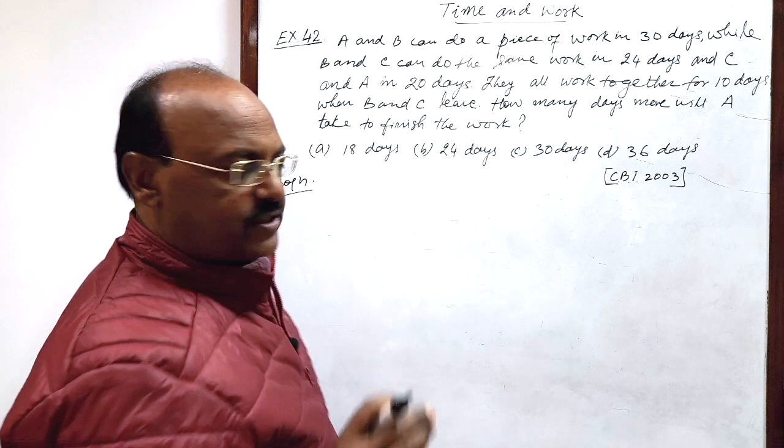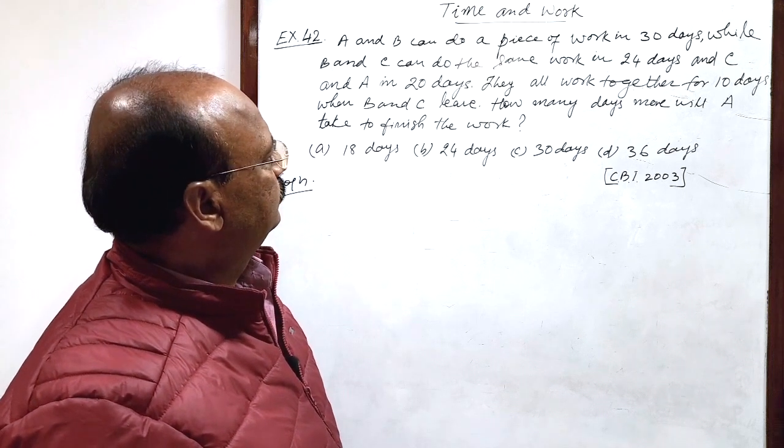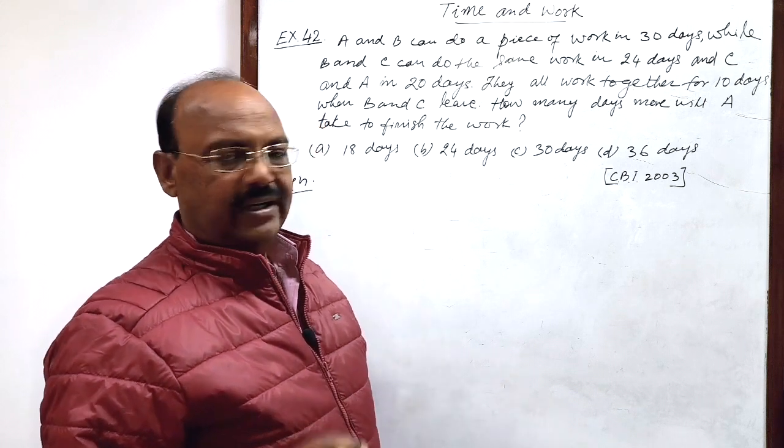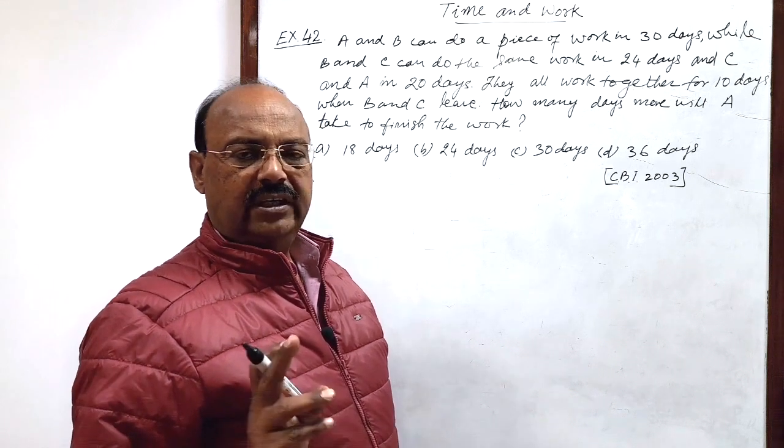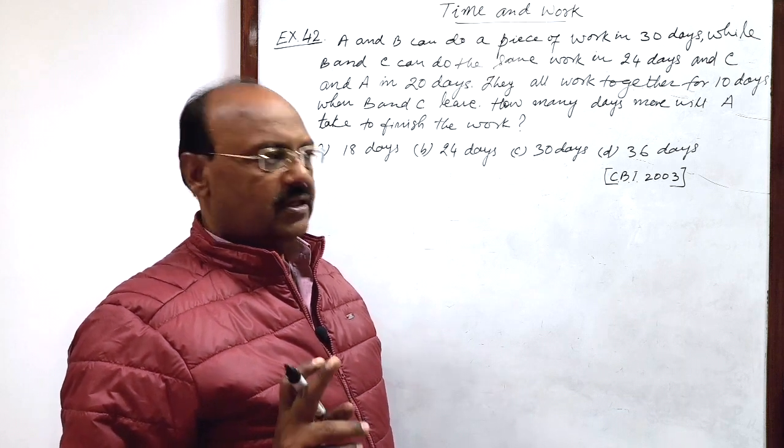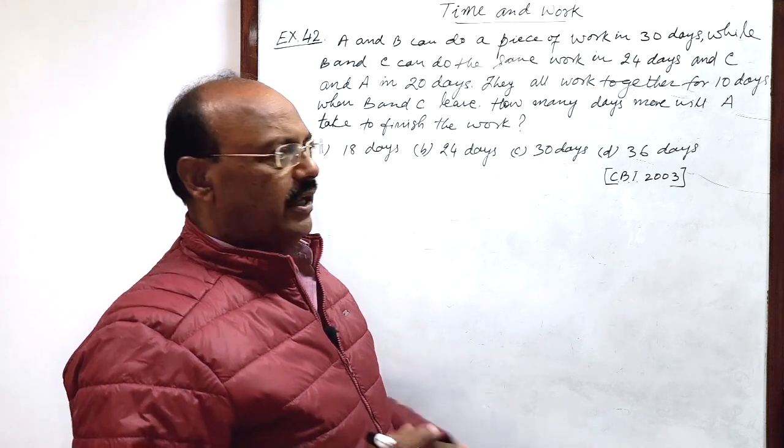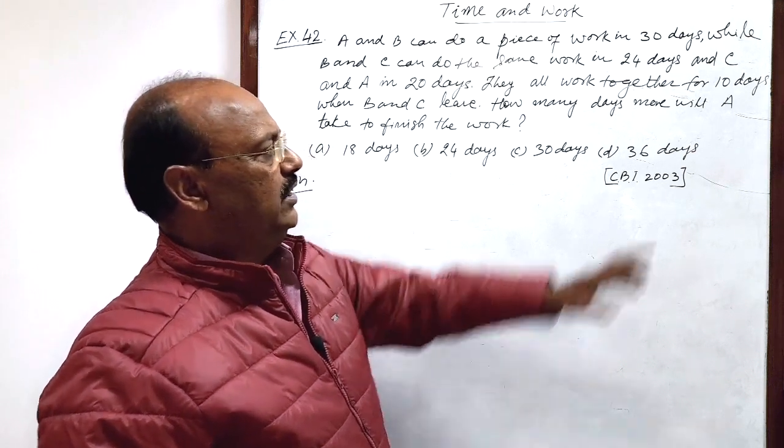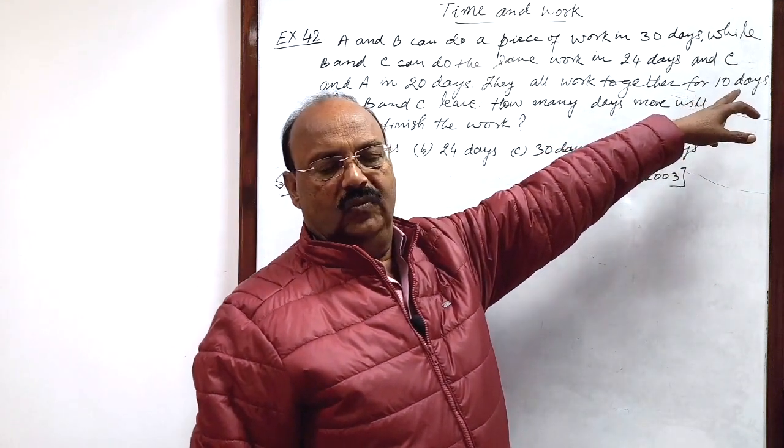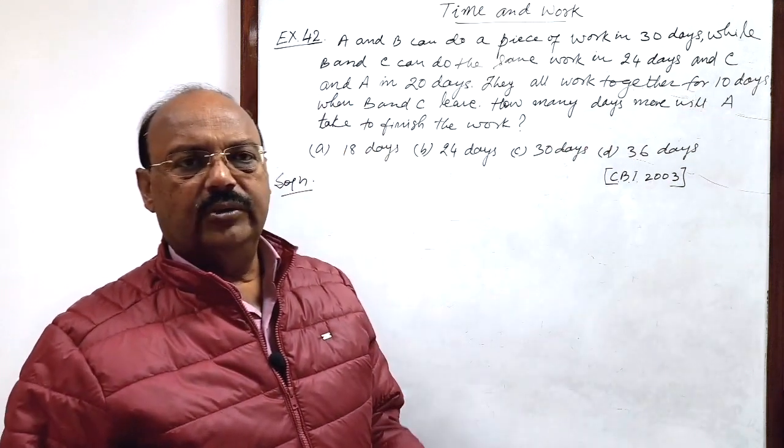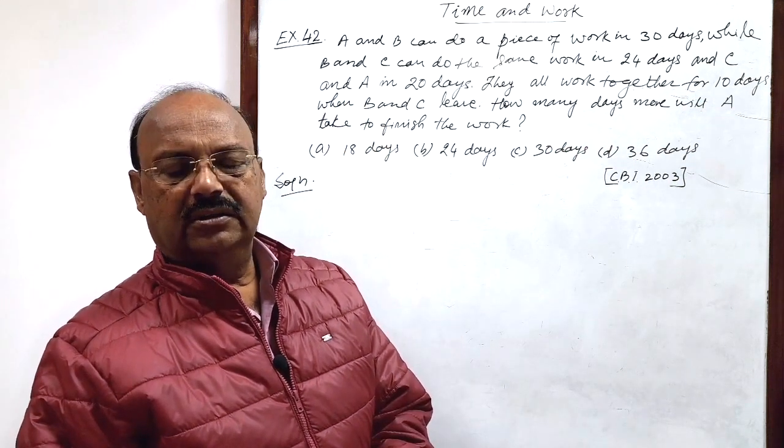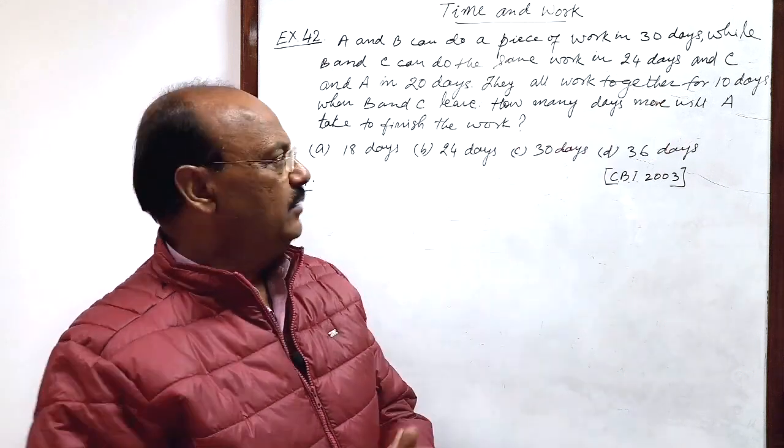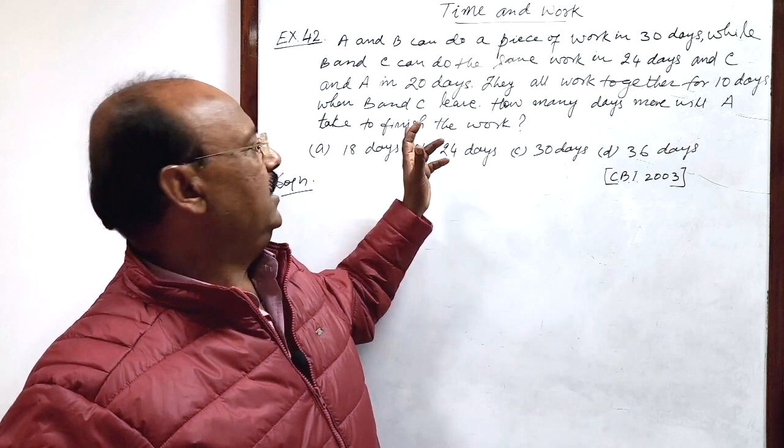First step, we will find out amount of work done by A, B and C working together in one day. Second step, the amount of work done by A, B and C working together in 10 days. Third step, you have to find out the remaining work: 1 minus amount of work done in 10 days. And the remaining work will be done by A.